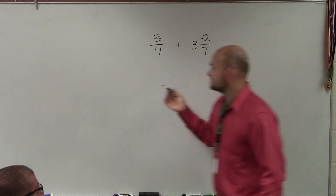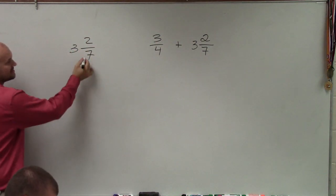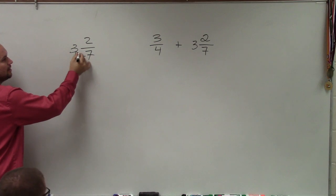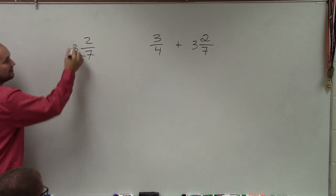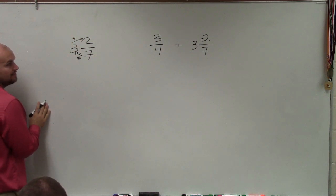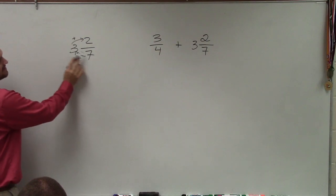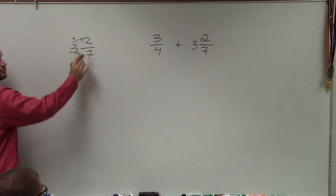So to do that, I'll just do this to the side. When converting that, you take your denominator, multiply it by the whole number, and then add it to the numerator. So 7 times 3 is 21, plus 2 is 23.